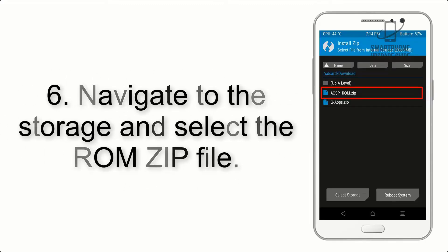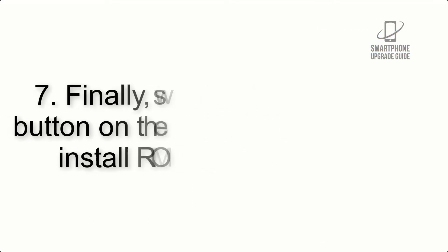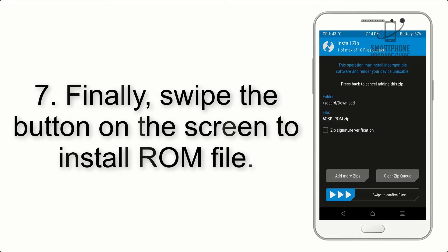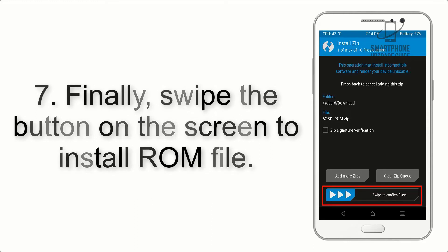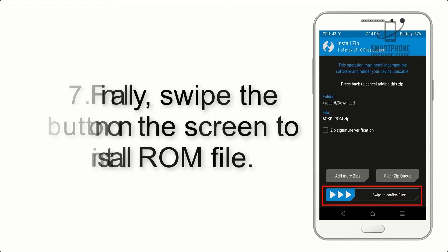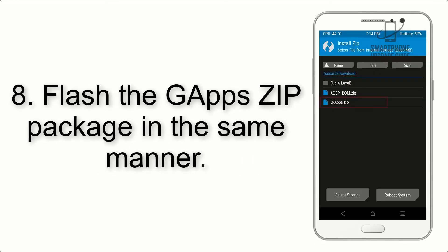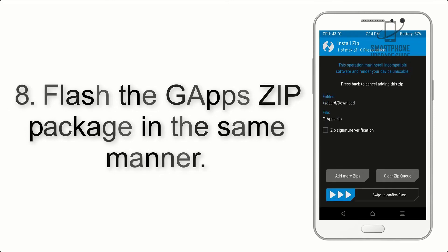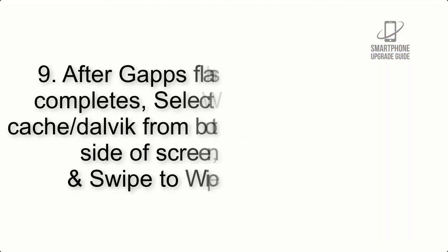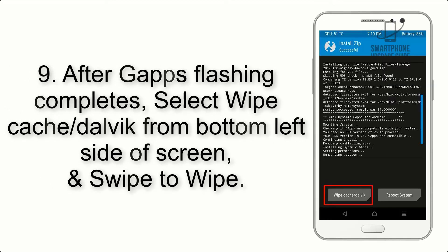Step 5: Go back to the recovery main screen and tap on the Install button. Step 6: Navigate to the storage and select the ROM zip file. Step 7: Finally, swipe the button on the screen to install the ROM file. Step 8: Flash the GApps zip package in the same manner.